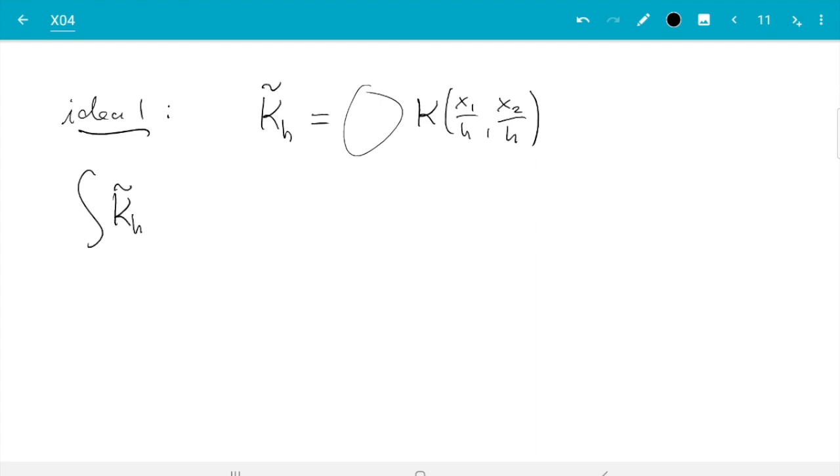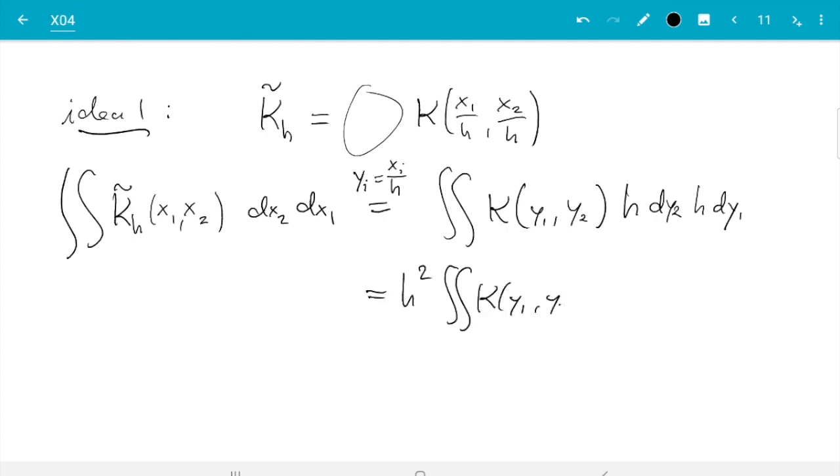So let's just put squiggle here to denote the formula before I've written the correct pre-factor. So integral K̃_h of x1, x2 dx2 dx1 - well we can do our substitution, so we do yi = xi/h. That's integral K(y1, y2), and then dx2 dx1 is h dy2 dy1. So what we get here is h² integral K(y1, y2) dy2 dy1, and if K is a kernel that integral is one, so it's h².